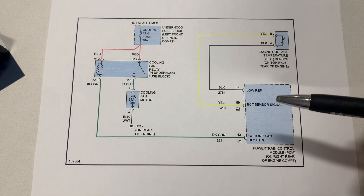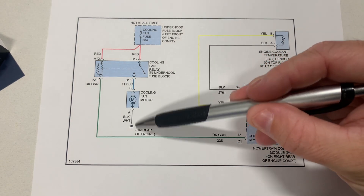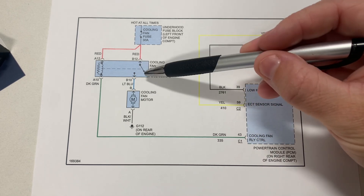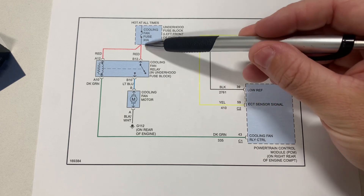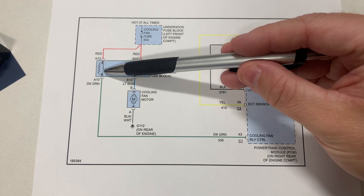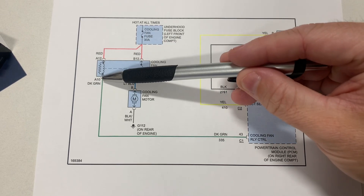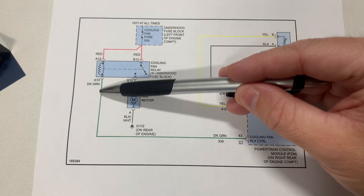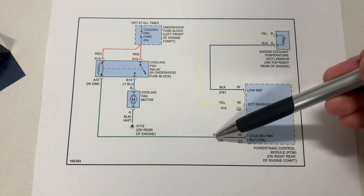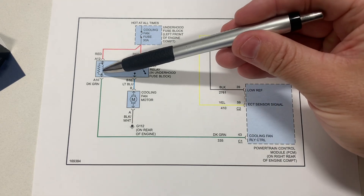The fan motor is our ultimate goal to turn on. The motor gets ground all the time, so we're waiting for it to get power, and the relay is going to be providing that. Something has to activate that relay — the relay has power all the time but it's waiting for ground, and it's going to get that ground from the computer. So this dark green wire is an output wire controlling the coil inside the relay.